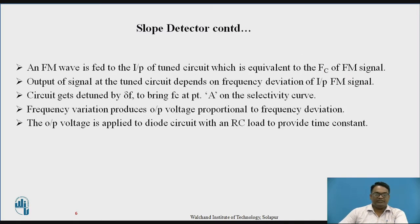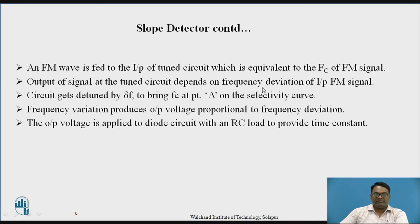In the slope detector, an FM signal is first fed to the input of the tuned circuit, which is tuned to the carrier frequency Fc of the FM signal. The output of the signal taken across the tuned circuit depends upon the frequency deviation of the input FM signal. So the input of the tuned circuit depends on the carrier frequency Fc, and the output depends on the frequency deviation delta-F.